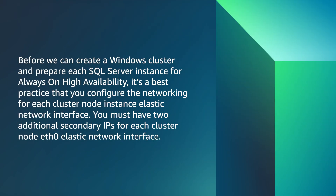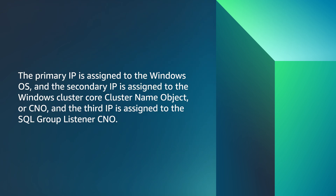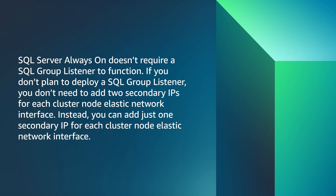Before we create a Windows cluster and prepare each SQL Server instance for Always On, it is a best practice to configure the networking for each cluster node's Elastic Network Interface. You must have two additional secondary IPs for each cluster node's ENI. The primary IP is assigned to the Windows OS, the secondary IP is assigned to the Windows Cluster Name Object (CNO), and the third IP is assigned to the SQL group listener CNO. If you don't plan to deploy a SQL group listener, you only need to add one secondary IP for each cluster node's ENI.